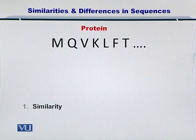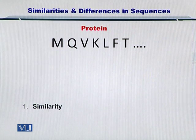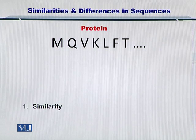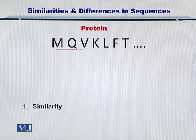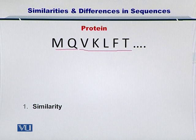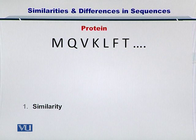Let's start by considering a protein sequence given here. Only a few amino acids are mentioned — typically proteins are very long, but this is just an example. So we have MQVKLFT, that is about seven amino acids, and now we are going to look at what similarity means precisely.